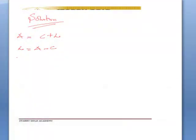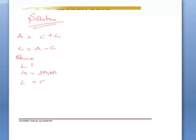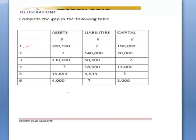Here in question number one, L is what we are looking for. A is three hundred thousand and C is one ninety thousand. So L equals three hundred thousand minus one ninety thousand, and L equals one hundred and ten thousand.